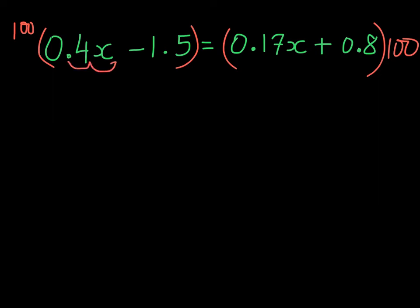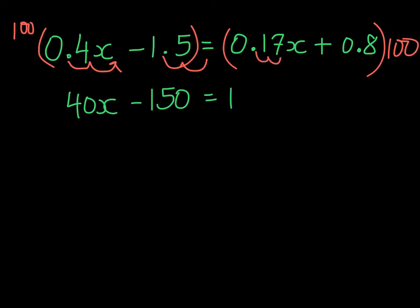So that will give us 40x in this first term. The next one will become negative 150. Over here we get 17x, and lastly we get 80. Notice there are no more decimals. Now we solve like we normally do.